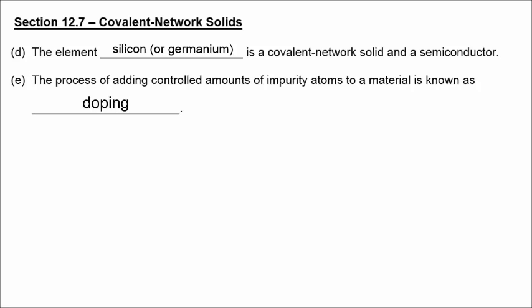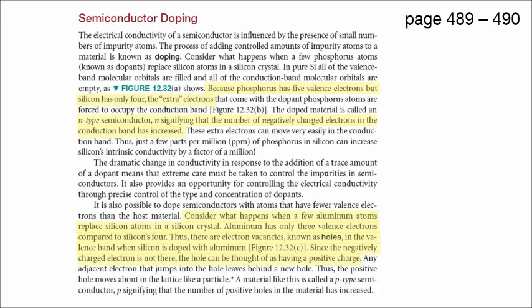Let's talk about different ways in which we can enhance the conductivity of semiconductors. Semiconductor doping is discussed on pages 489 and 490. Phosphorus is one of the things you could substitute, and phosphorus has five valence electrons, but silicon has only four. So the extra electrons create what's called an N-type semiconductor. N signifying that the number of negatively charged electrons has increased. On the other hand, if you substitute aluminum for silicon, aluminum has only three valence electrons compared to silicon's four. So instead of having extra electrons, there are electron vacancies, known as holes, and the negatively charged electron is not there. The hole can be thought of as having a positive charge. So instead of an N-type semiconductor, you can have a P-type semiconductor, where the P represents positive holes in the material.